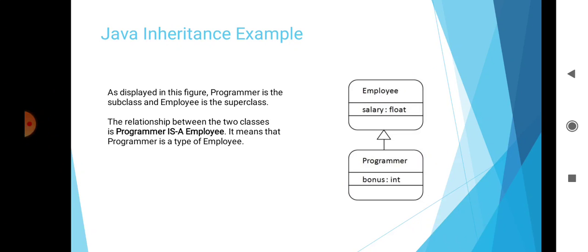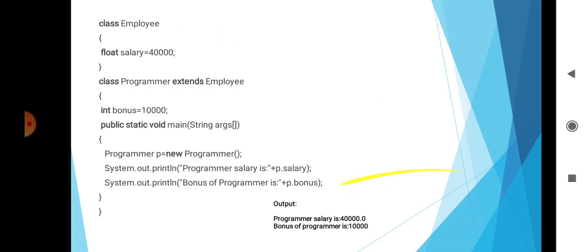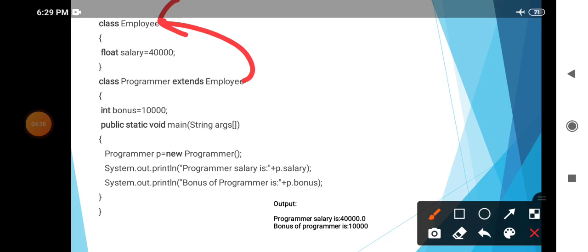Now we'll write the program for Programmer and Employee. Class Employee has float salary equals 40,000. Then we define class Programmer that extends Employee. It has int bonus equals 10,000. In the public static void main method, we create an object of Programmer class: Programmer p = new Programmer(). Then we display the salary and bonus.